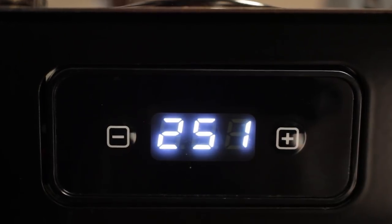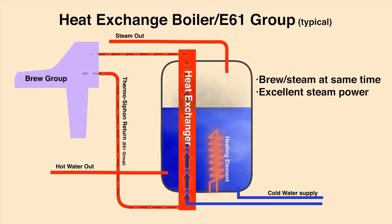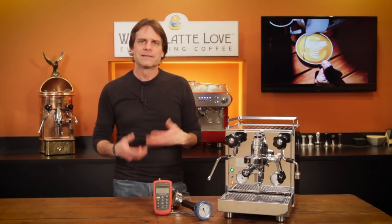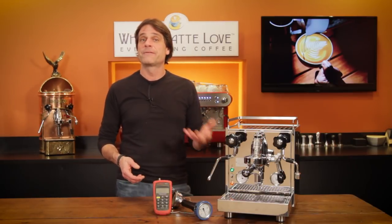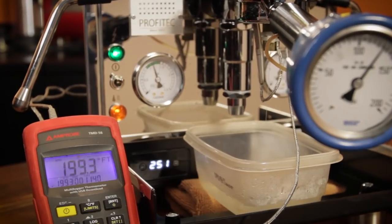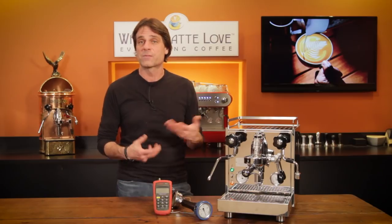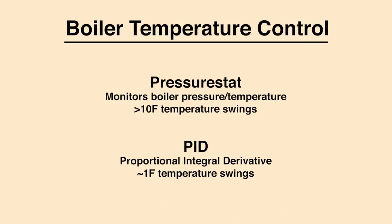With the addition of the PID and engineered flow control of the thermosyphon system in the Pro 500, there's no need to do a flush prior to extractions. If you're unfamiliar with PID, a little background on why it's beneficial and used on high-end espresso machines. The big benefit is extremely accurate and stable brew water temperatures. There are two common methods of controlling boiler temperature in espresso machines: a pressure stat, or a PID, which stands for Proportional Integral Derivative.